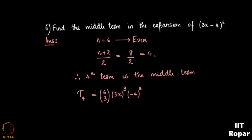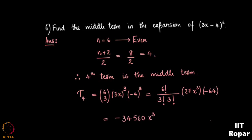Simplifying: 6C3 = 6!/(3!·3!) = 20, (3x)³ = 27x³, (−4)³ = −64. So T4 = 20·27x³·(−64) = −34560x³. This is the middle term in the expansion of (3x − 4)^6.